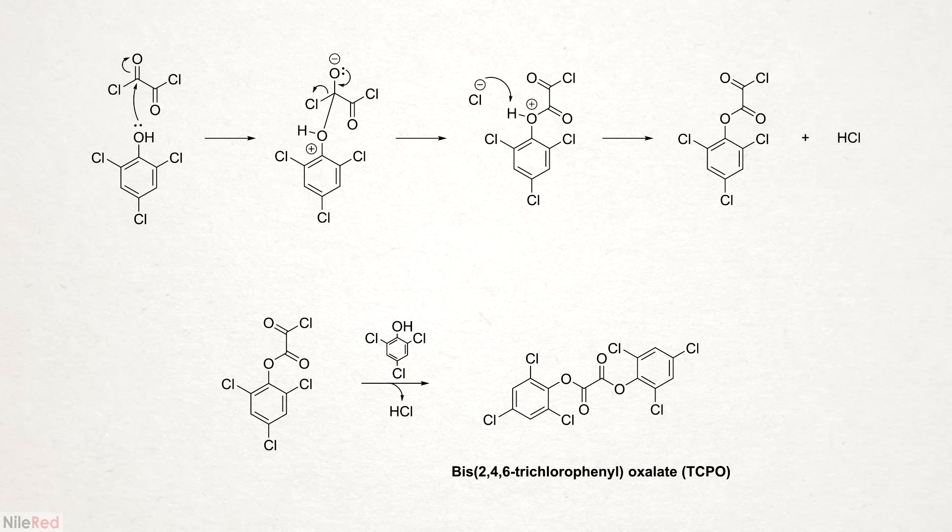So in terms of the mechanism, this is what we have going on. In the first step, the oxygen of TCP attacks oxalyl chloride, which opens up one of the carbonyls. The electrons on the oxygen move to reform the double bond and the chloride is kicked off. It then swings back around and picks up the hydrogen, forming our half-finished product and a molecule of hydrochloric acid. The reaction is then repeated to the other side of the oxalyl chloride to make the final TCPO.